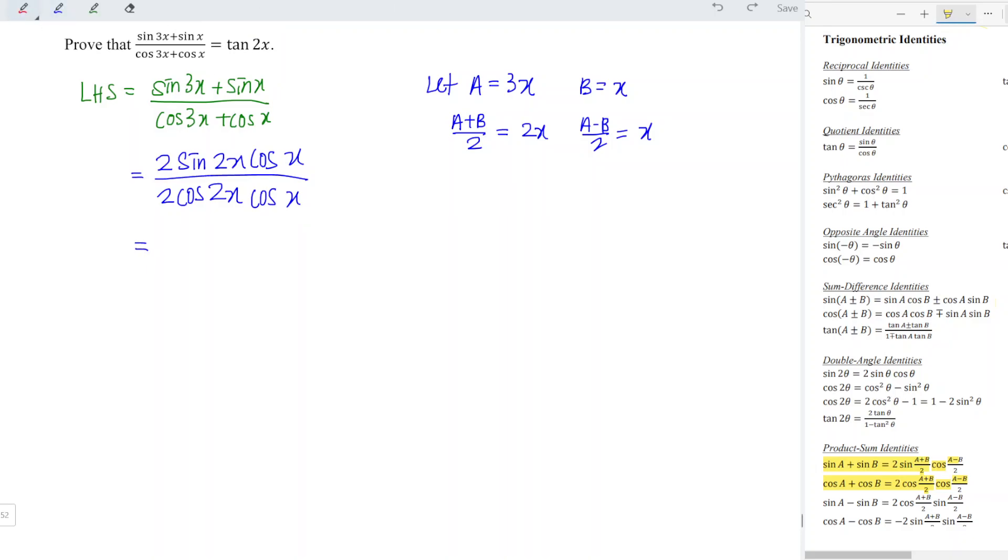These cancel each other. Cosine x over cosine x cancel each other. Sine over cosine is tangent, so the angle remains 2x, and we're done. This is exactly the same as the right hand side. That's all for this video. Thanks for watching, hope you like this, see you.